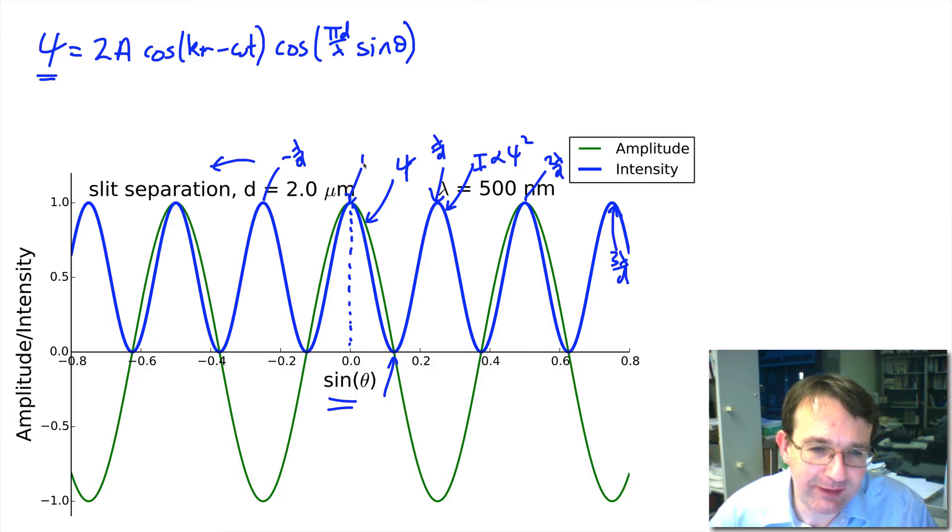With this central one here being at zero, the minima or the dark fringe will be at lambda over 2d and so on as we go out. So that's the double slit, double narrow slit pattern. Let's see if that's what we observe.